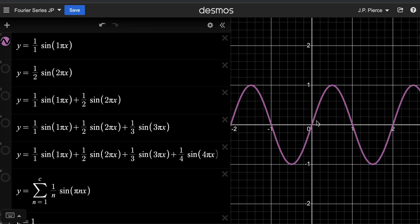And then this one happens to have a period of 2. So it does 1 full cycle after 2 units. So that's this graph here.